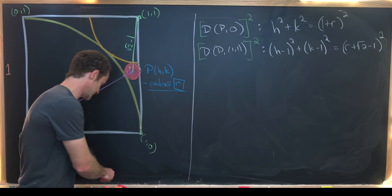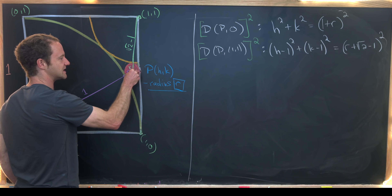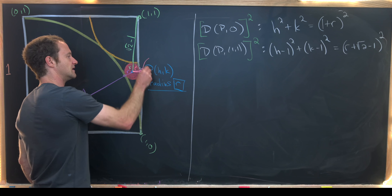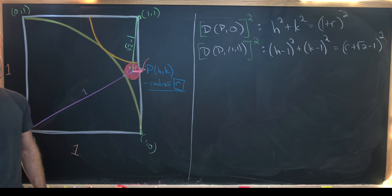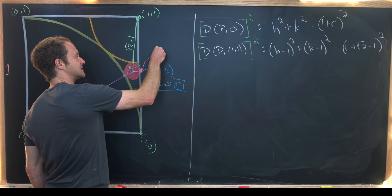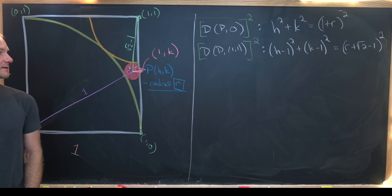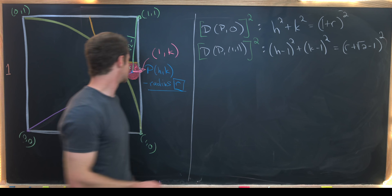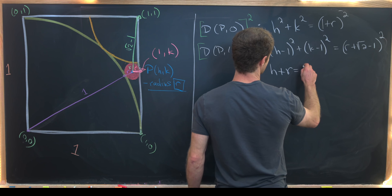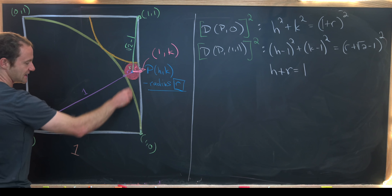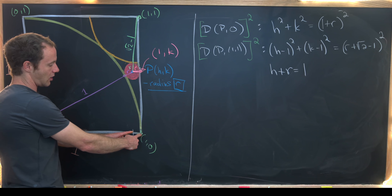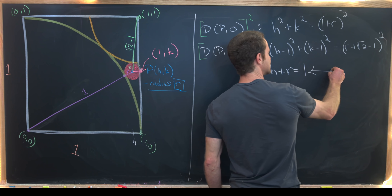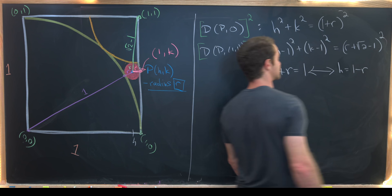The third equation is not too hard to get. The distance from P to the right side of the square equals another copy of the radius. That point on the right side has coordinates (1, k), so the distance from (h, k) to (1, k) equals r, meaning h + r = 1. Therefore h = 1 − r, and that's our third equation.